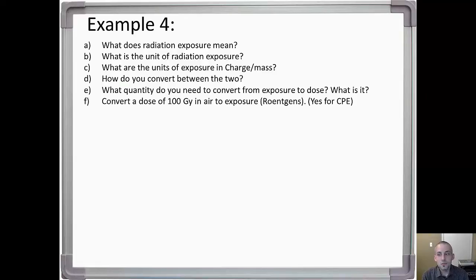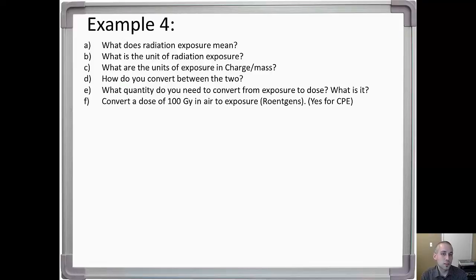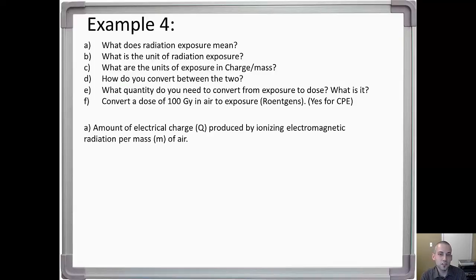Example four: what does radiation exposure mean? A lot of textbooks give a paragraph-long definition, but a quick one-sentence version is: it's the amount of electrical charge Q produced by ionizing electromagnetic radiation per mass of air. The unit of radiation exposure is roentgens, and the units in charge per mass are coulombs per kilogram.